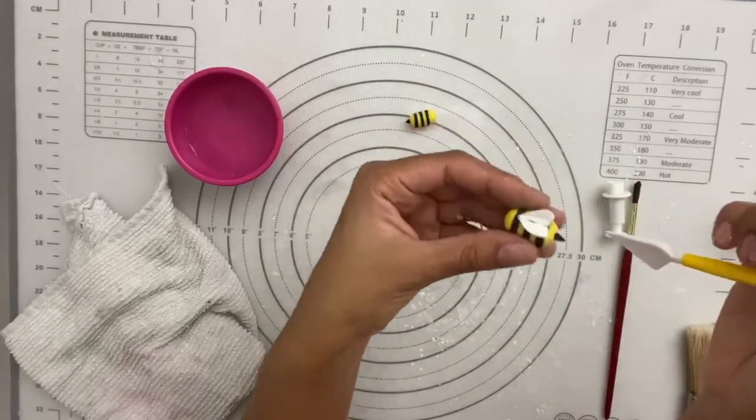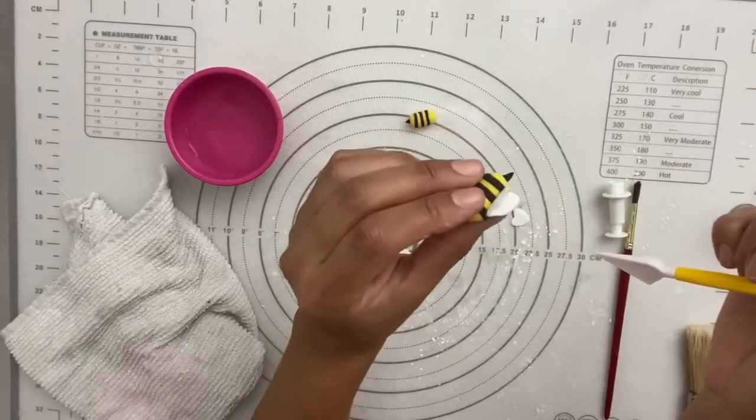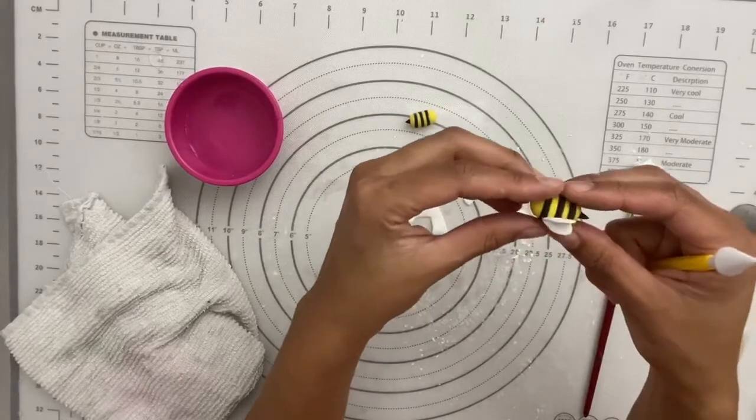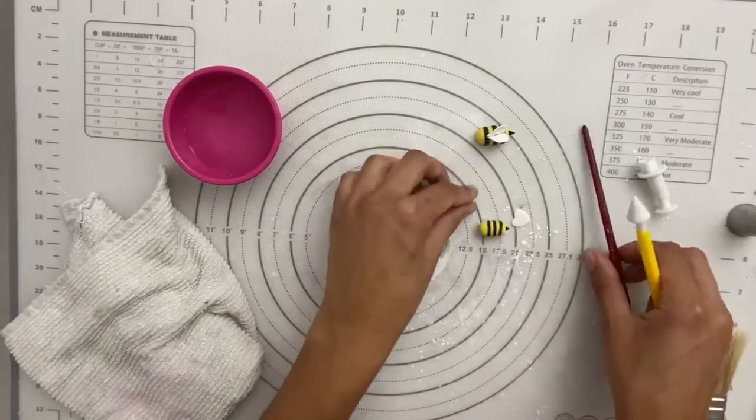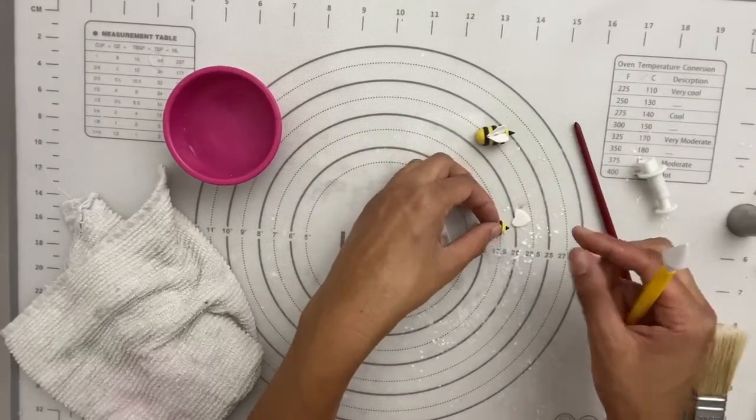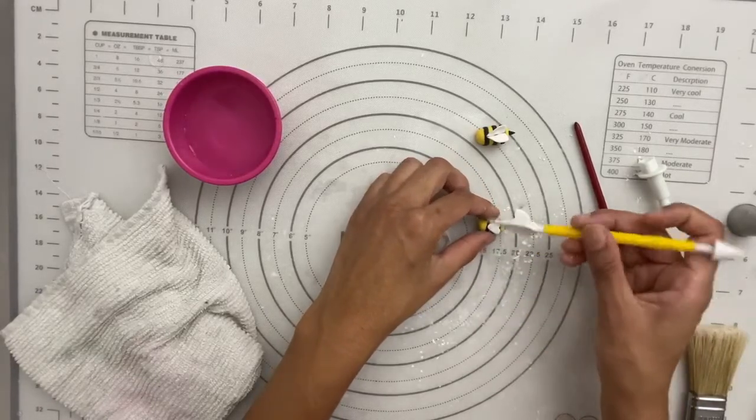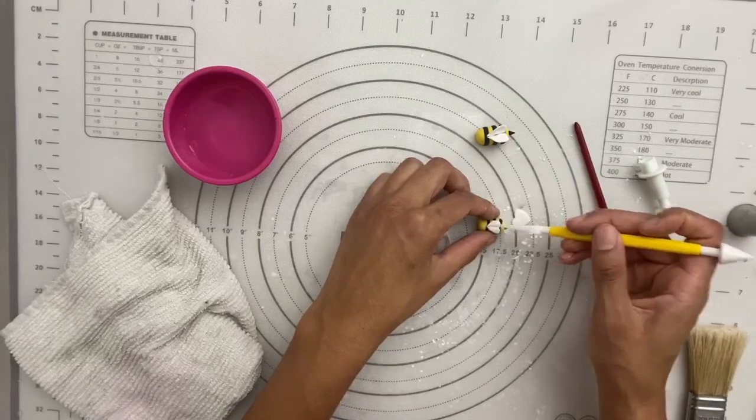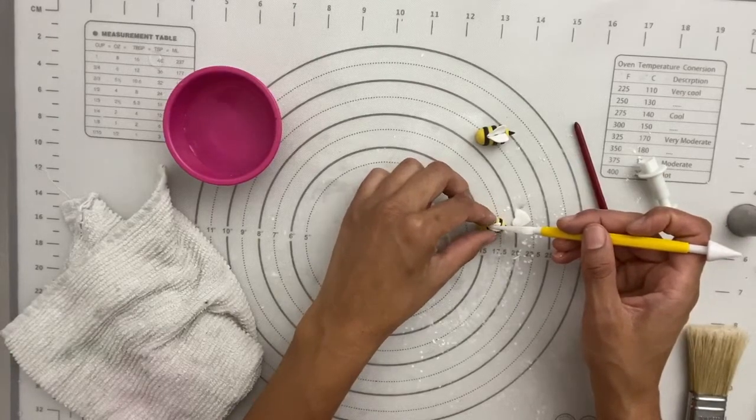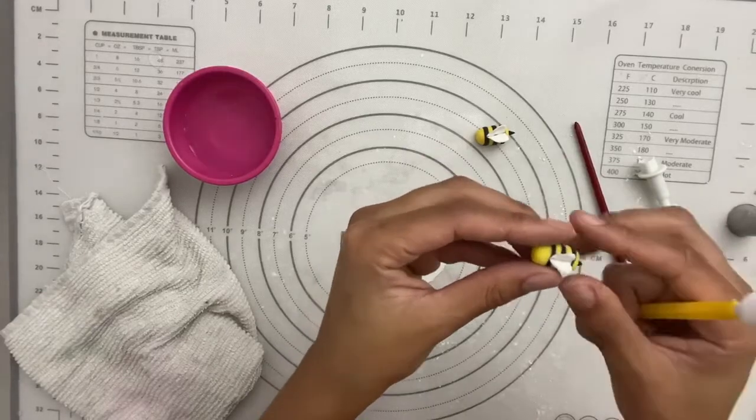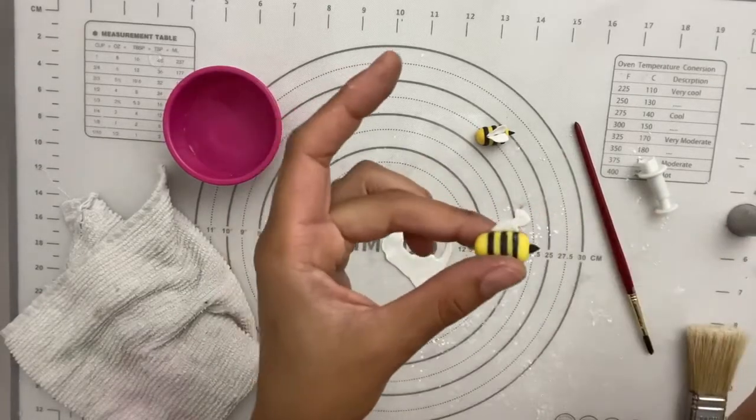You could do different shapes for his wings. You could use little half circles if you want. But this is just really easy if you have these heart shape cutters around. So for this little guy, I'm going to use the smaller heart. So you just lay it down with the point facing his head. And then just press down the center. Lift. And then the little wings will come up.